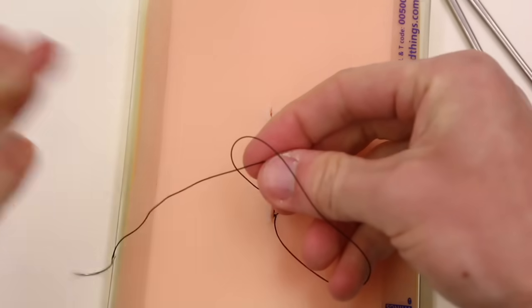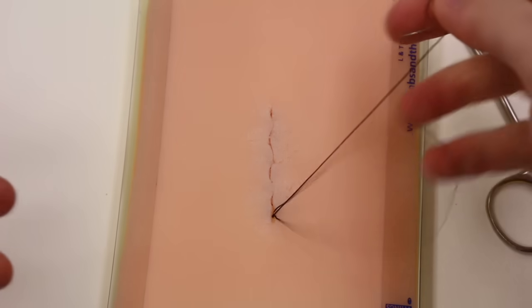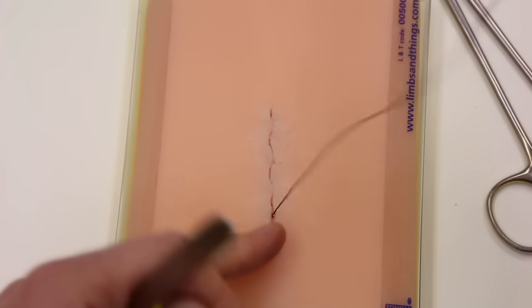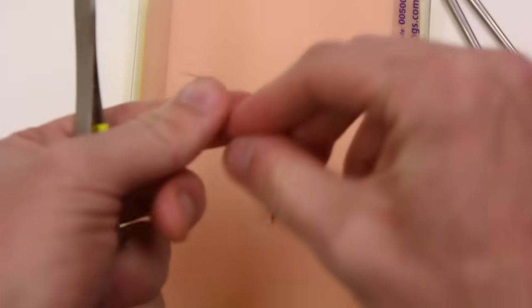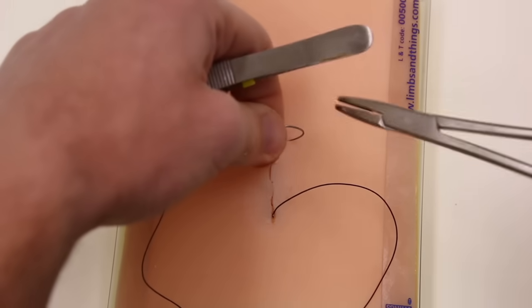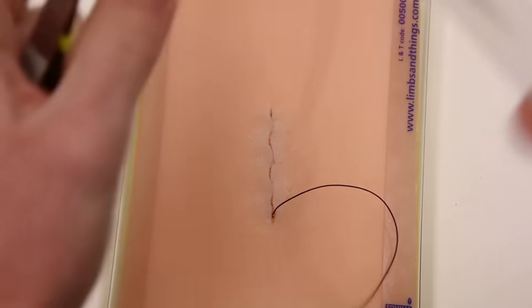Now, pull the needle through first, then let the knot tighten. Because if the needle hooks on the other side, you end up flailing around a bit and it looks silly.